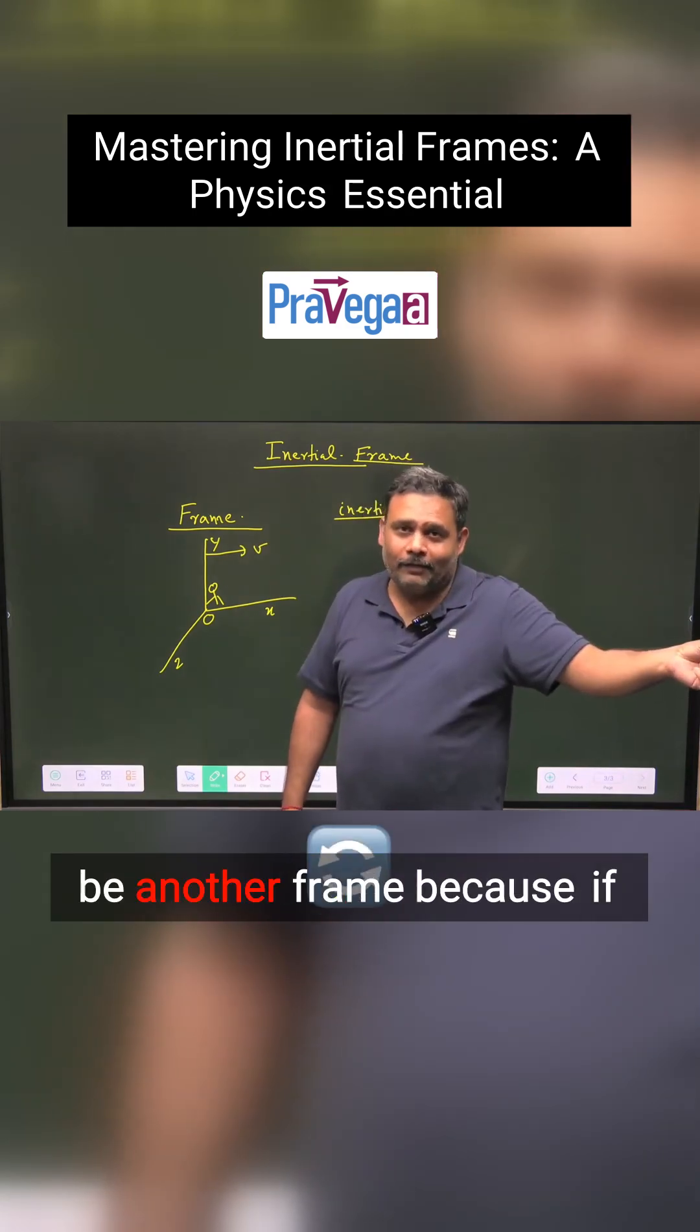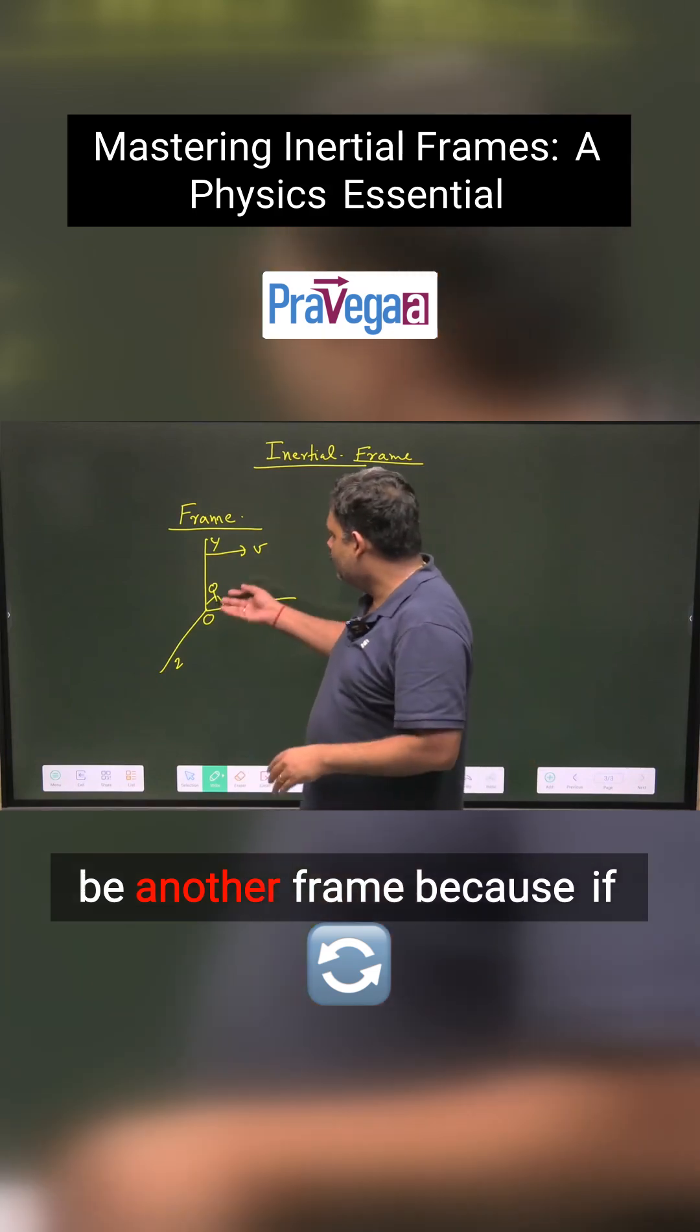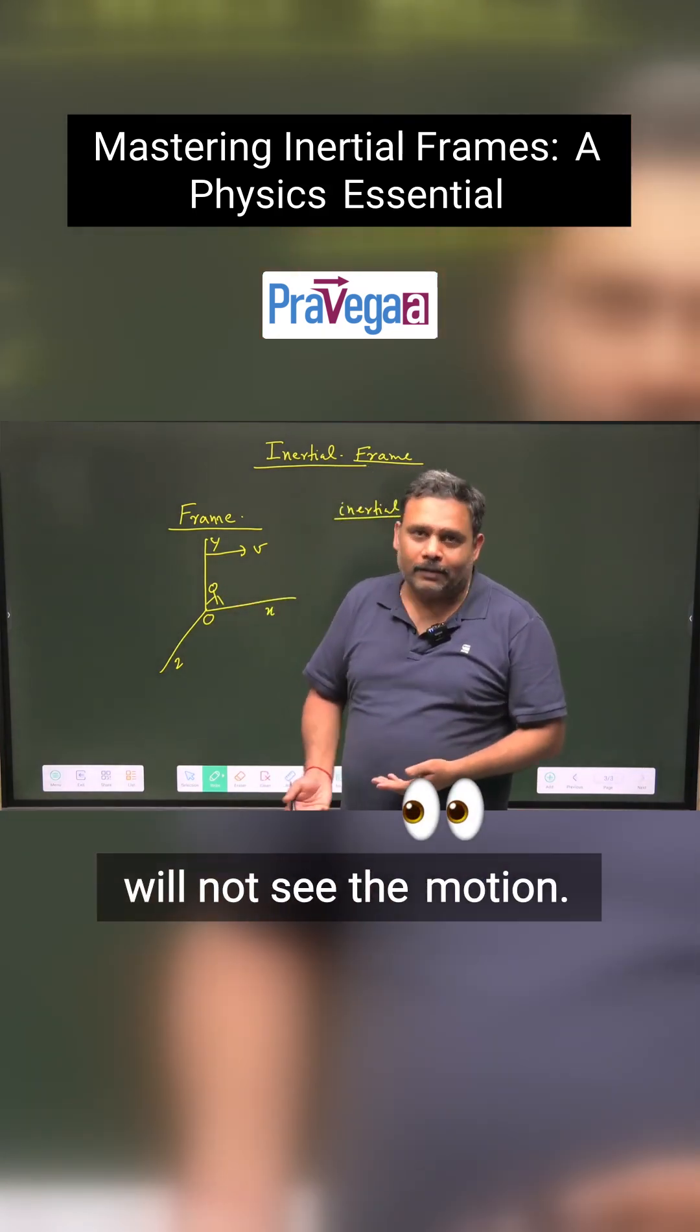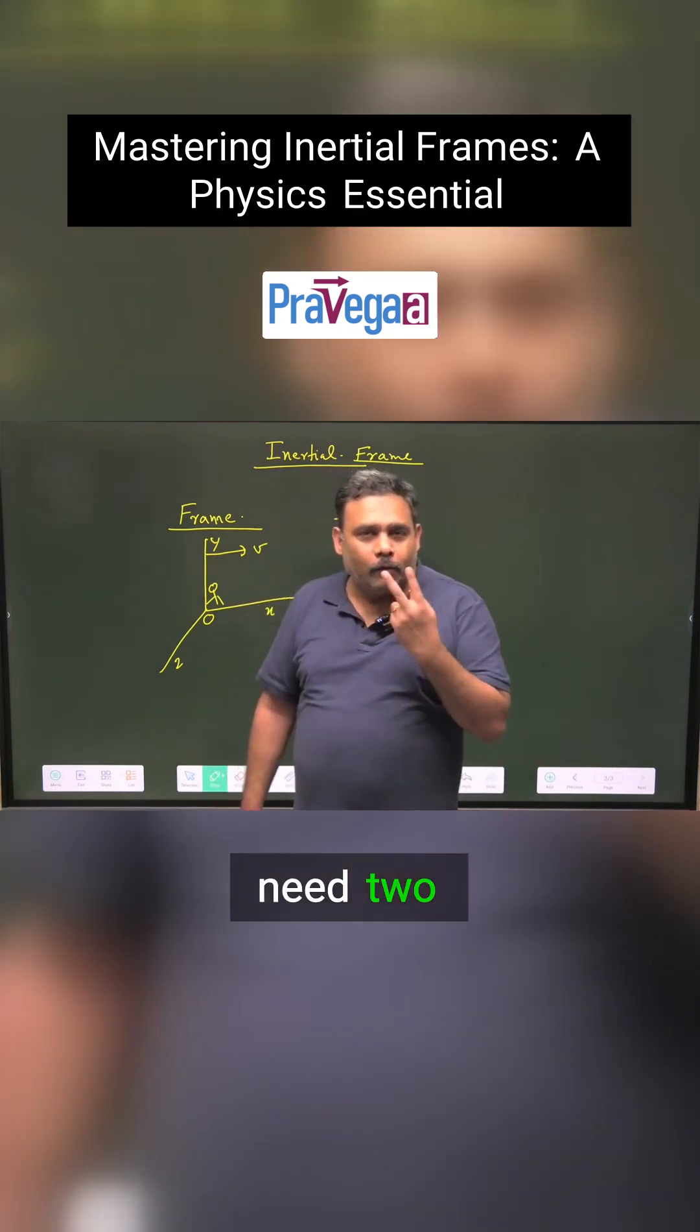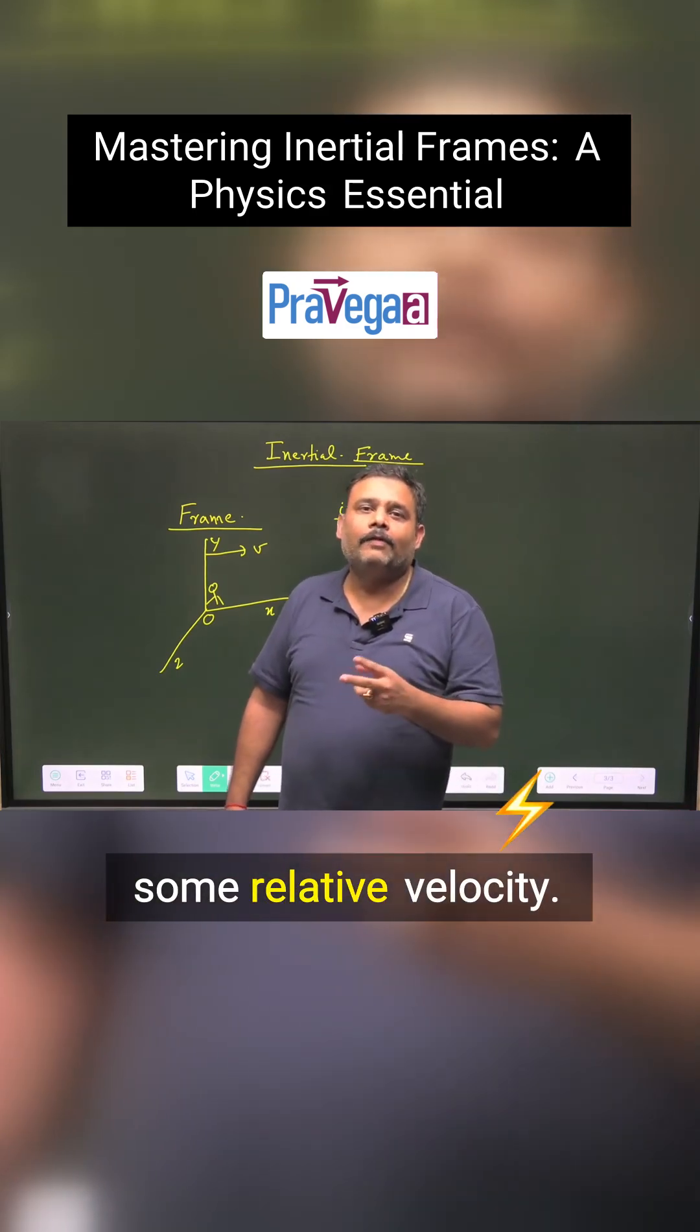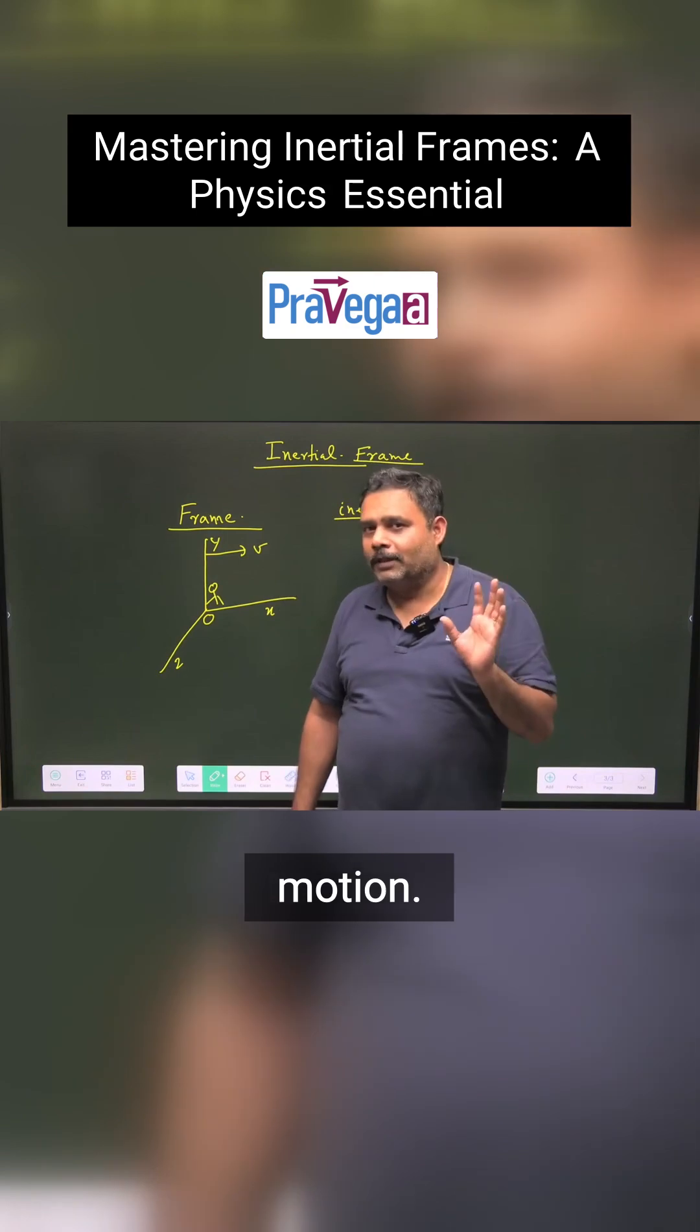Another observer will be another frame, because if two are on the same frame and both are at rest, they will not see the motion. But you need two different frames which have some relative velocity. Then only you can see the motion.